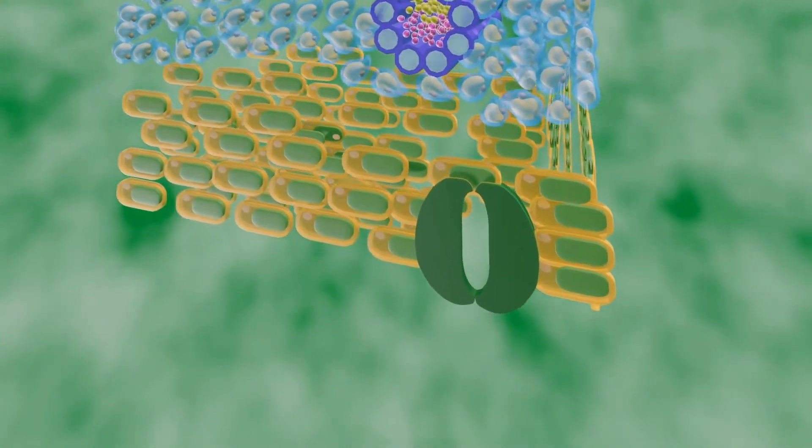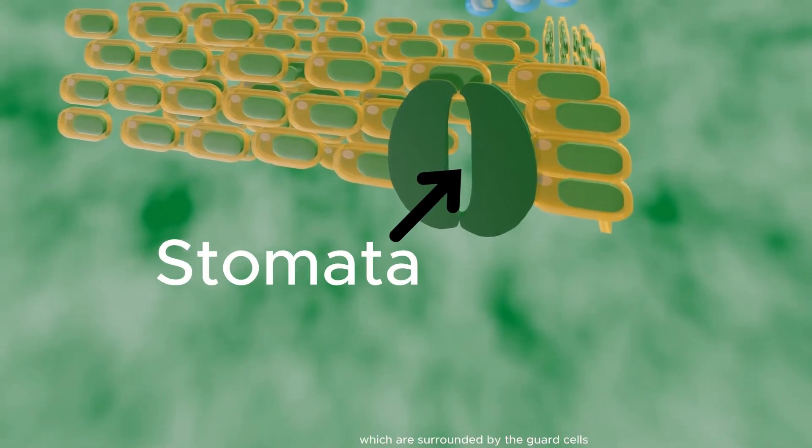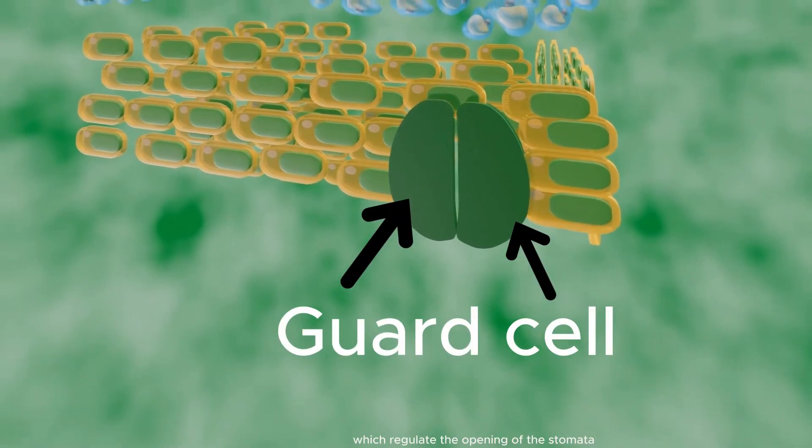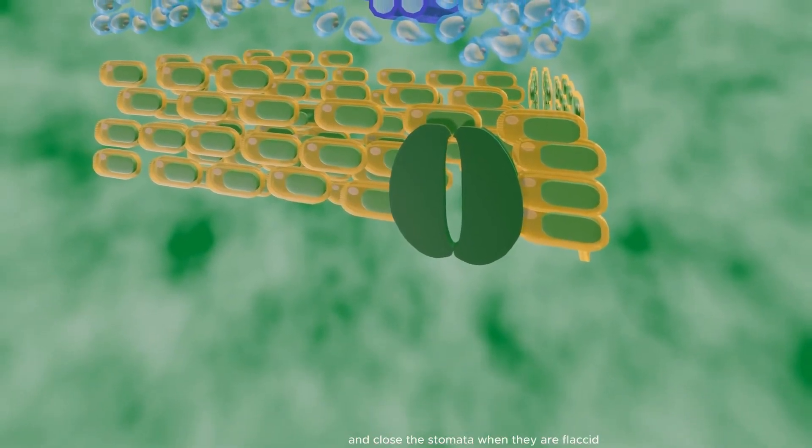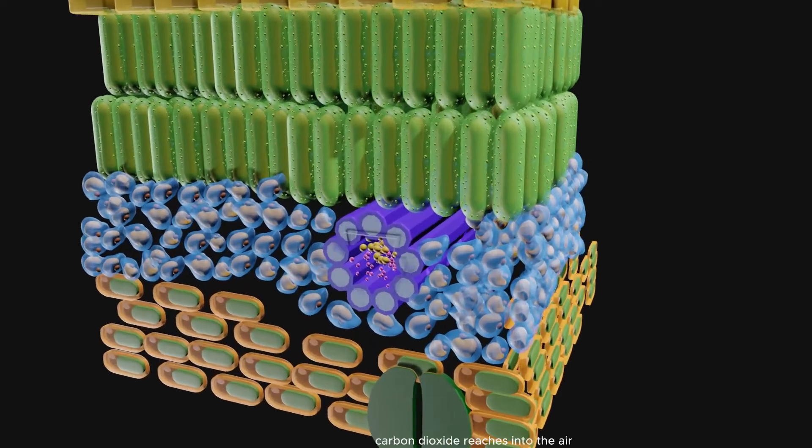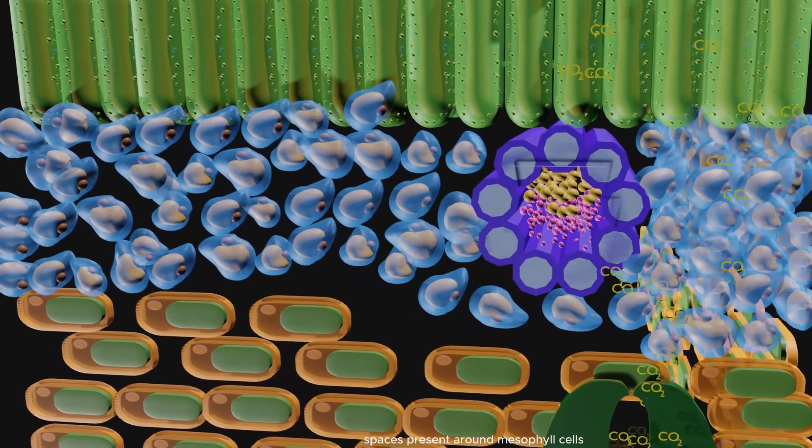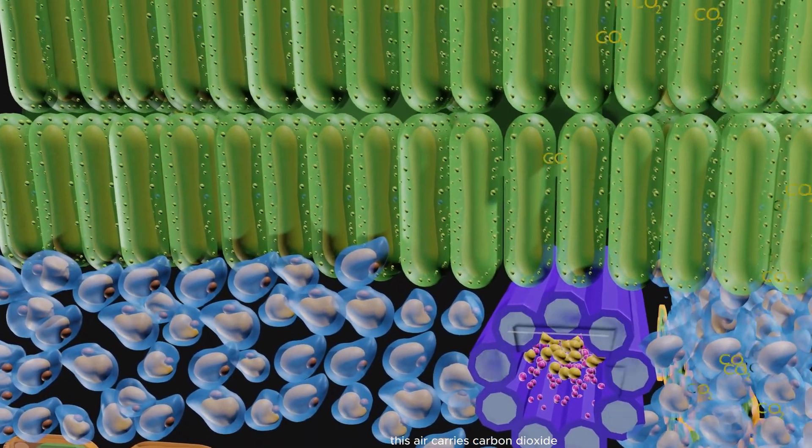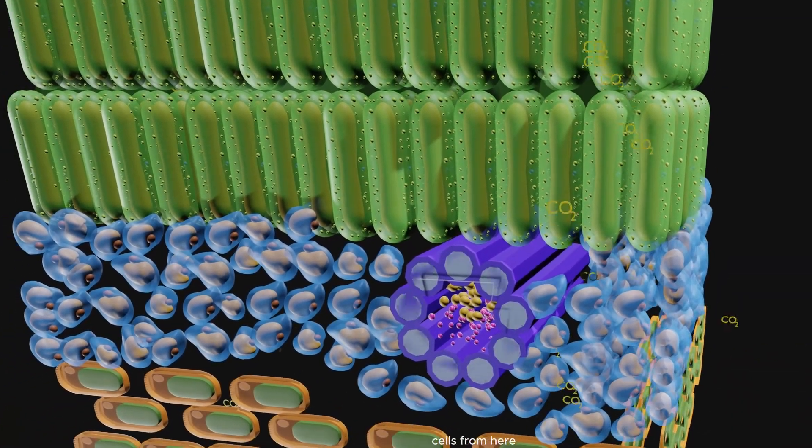The pore-like openings are the stomata which are surrounded by guard cells that regulate the opening of the stomata. Guard cells open the stomata when they are turgid and close the stomata when they are flaccid. Through stomata, carbon dioxide reaches into the air spaces present around mesophyll cells. This air carries carbon dioxide which gets absorbed in the thin layer of water surrounding mesophyll cells.